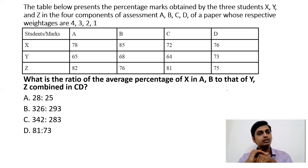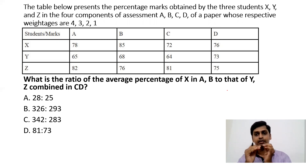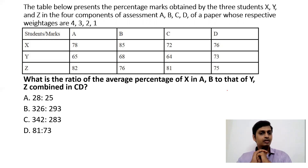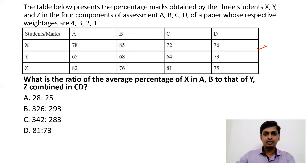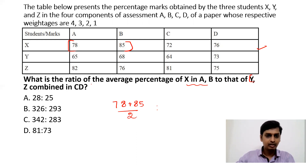Question six: a table presents percentage marks of three students X, Y, Z in four assessment components A, B, C, D with weightages 4, 3, 2, 1. Find the ratio of the average percentage of X in A and B to the combined average of Y and Z in C and D. For X: (78 + 85) ÷ 2. For Y and Z in C and D: (73 + 75 + 81 + 64) ÷ 4.